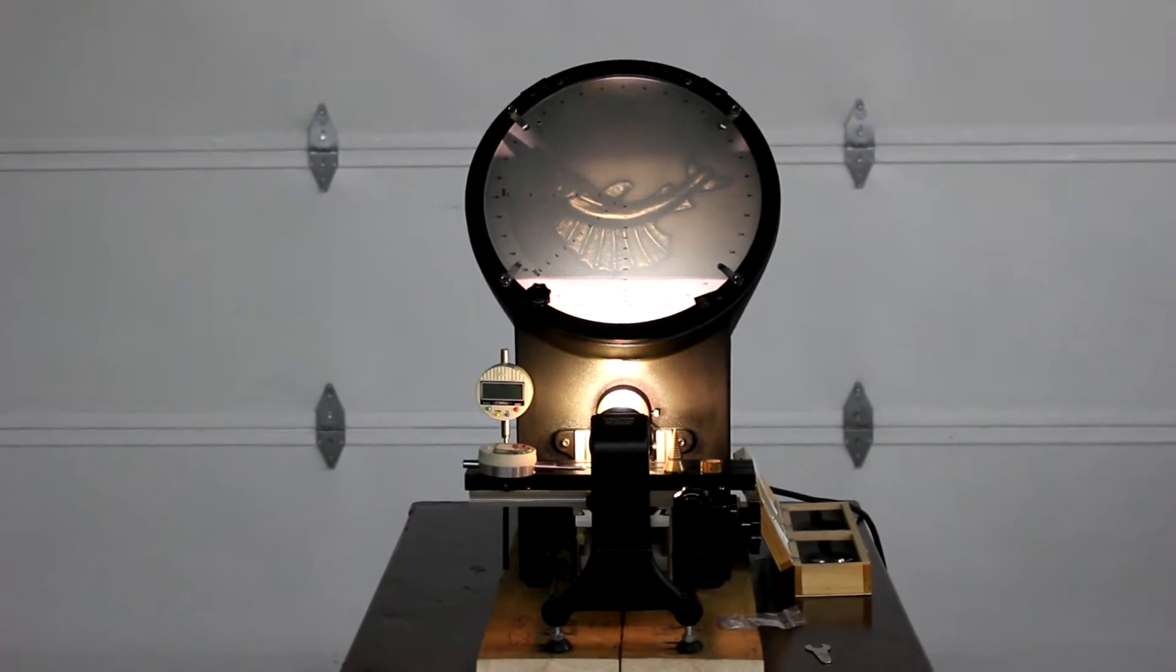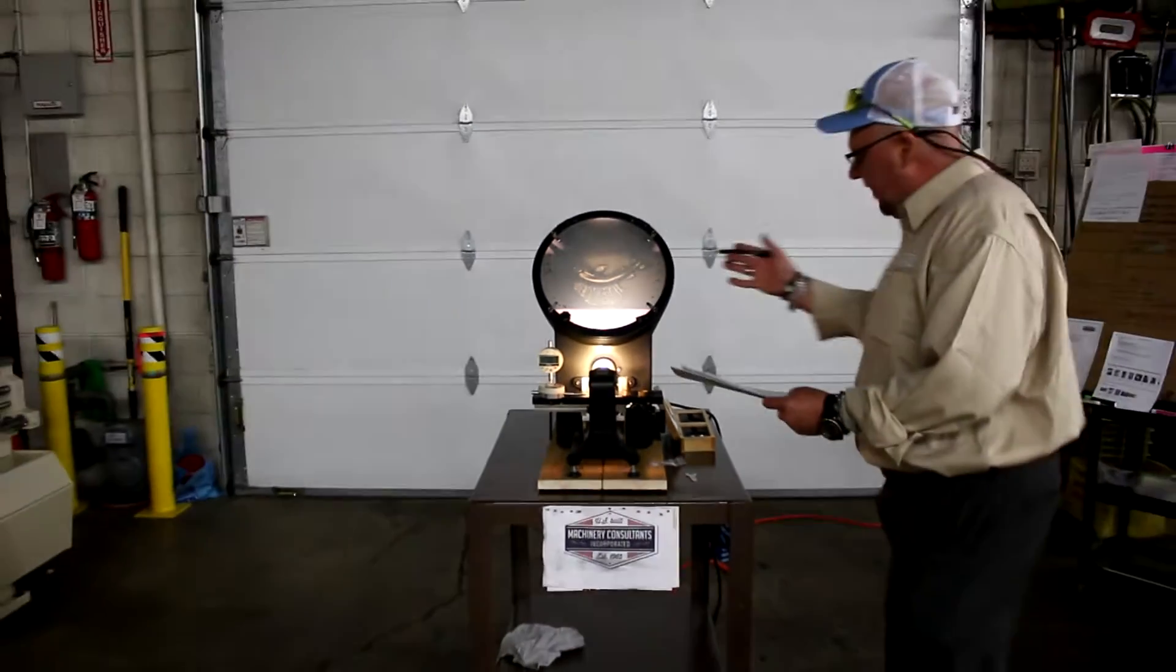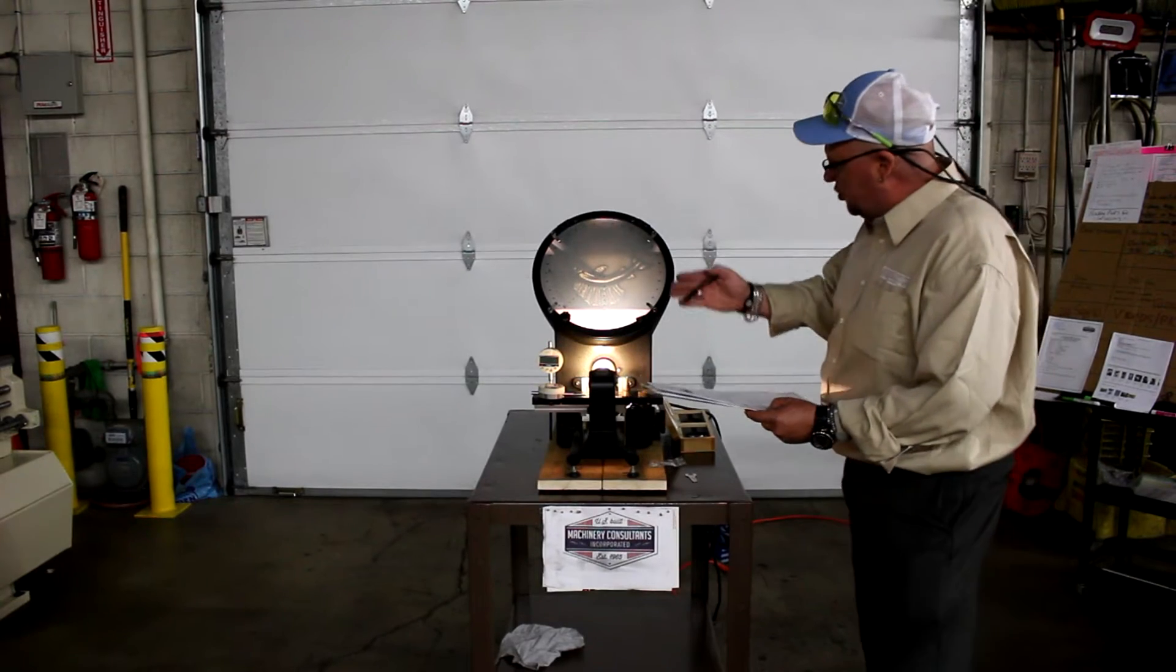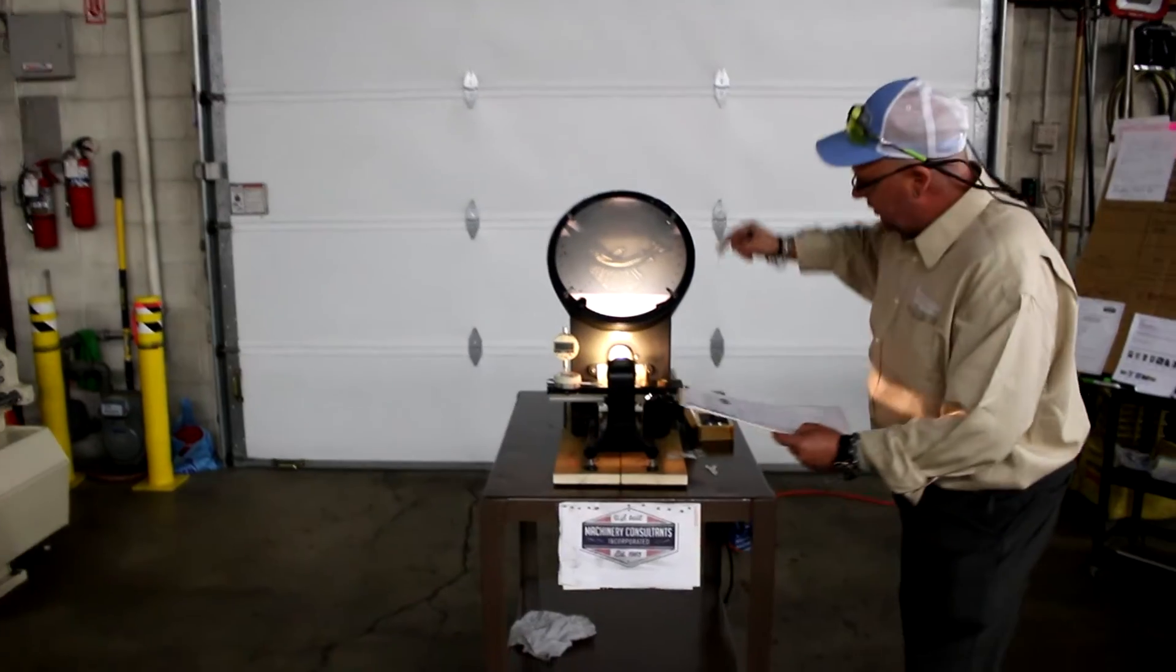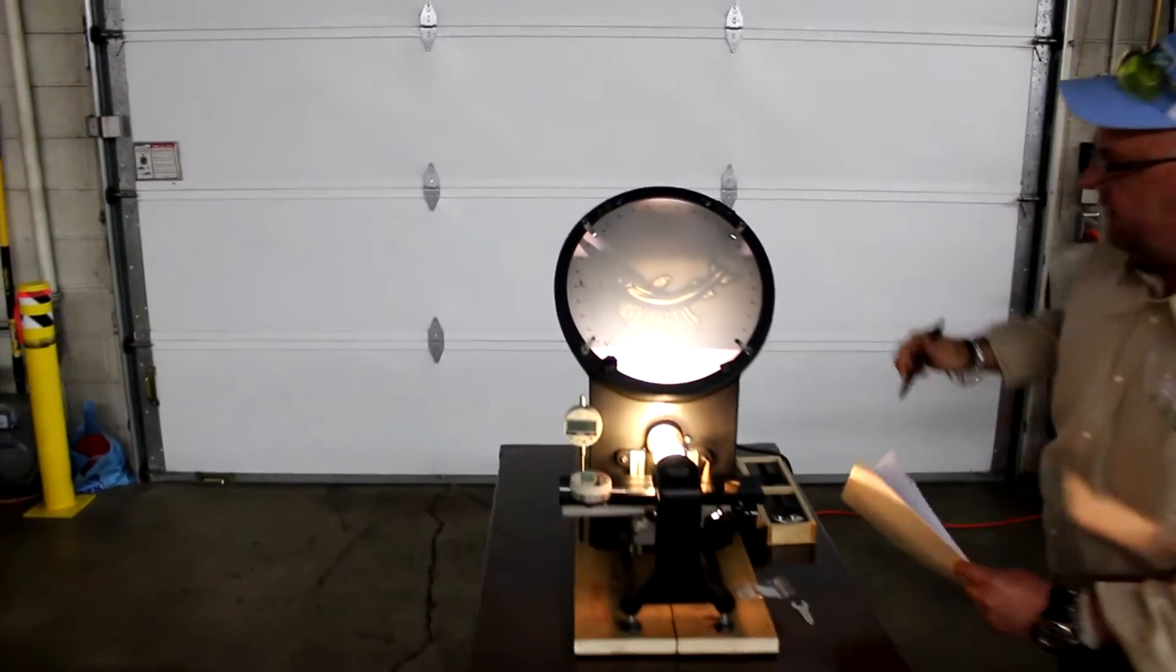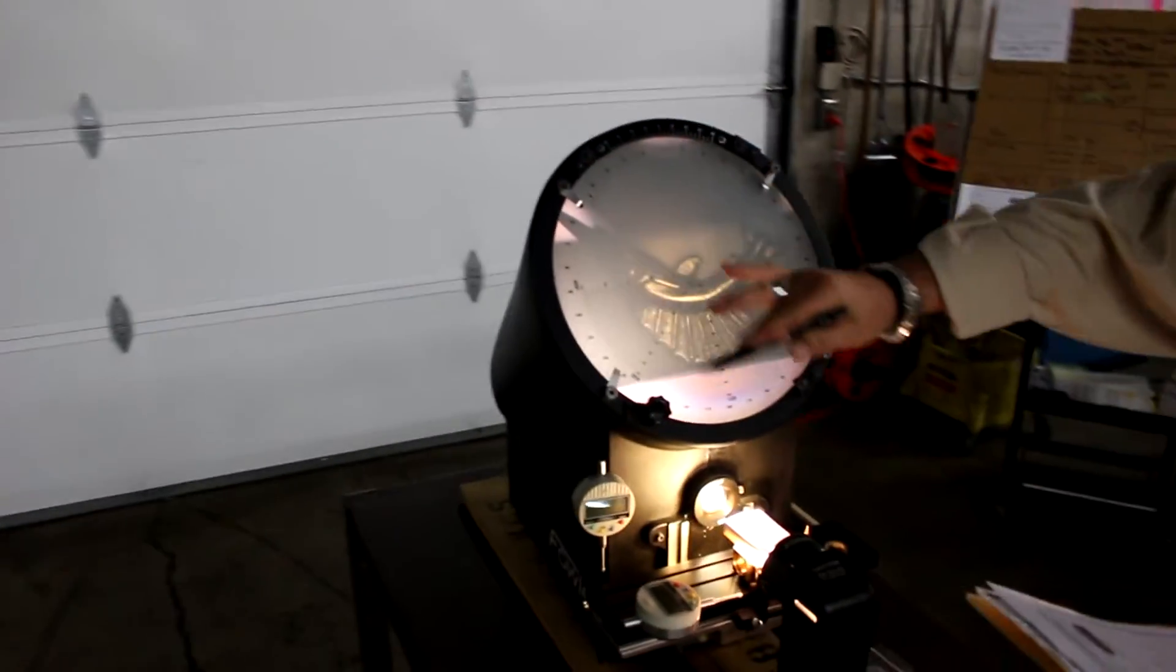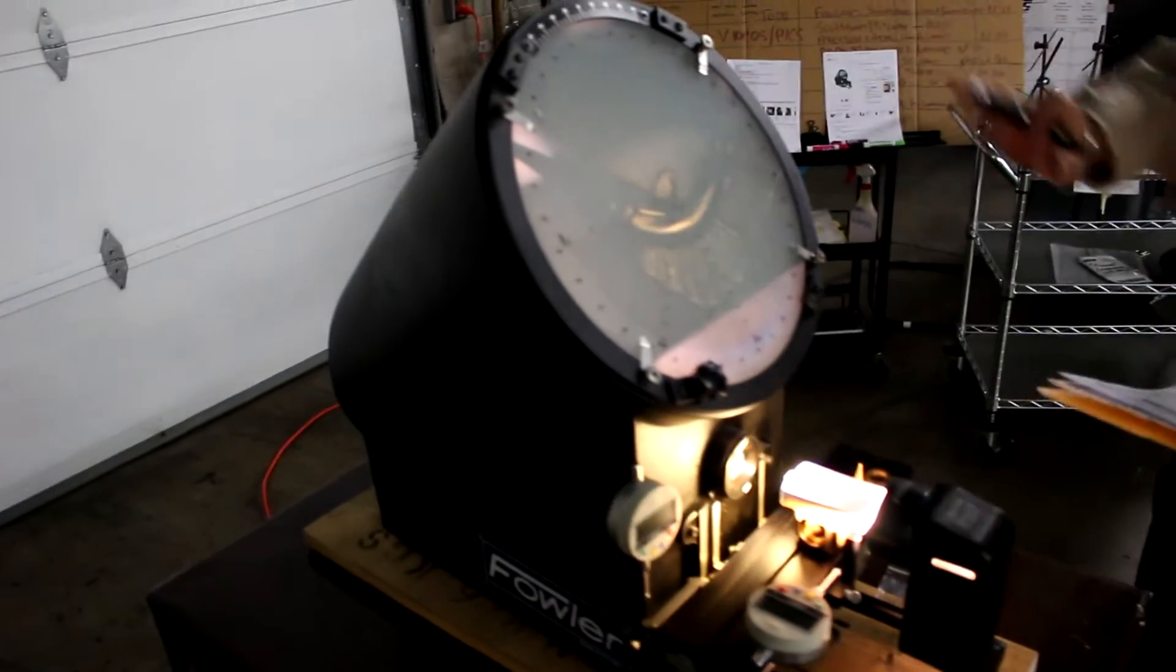This particular unit weighs approximately 95 pounds. The dimensions are 28 inches front to back, 12 inches left to right, and the overall height is about 22.5 inches. Again, we have a 12-inch diameter on the optical comparator screen.